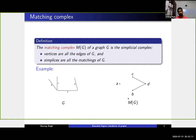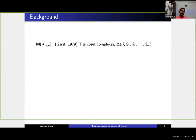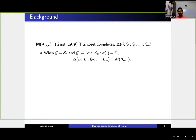A bit of history about these complexes: it was in 1979 when Garst was working on Pitcher-Coset complexes. A particular example of these is the coset complex, related to a group and its subgroups. When you take the symmetric group and the subgroups are all elements fixing the value i, you recover a complex associated with a particular graph, which is called the chessboard complex.